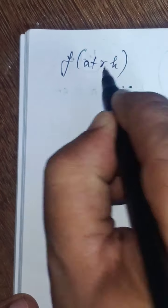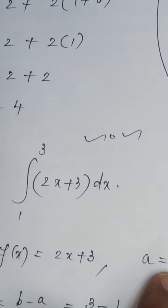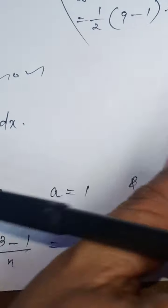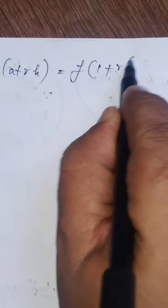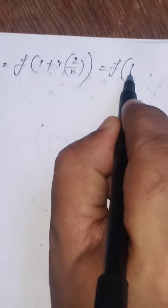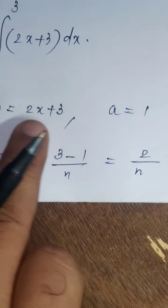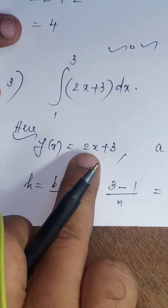Then, you have to find f(a + rh). The a value is 1 and h value is 2 by n. So, a plus r into h equals 1 plus 2r by n. Now, what is f(x)? f(x) equals 2x + 3. So, replace x by 1 plus 2r by n.